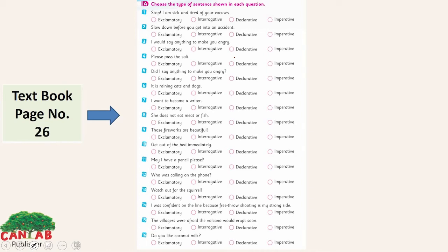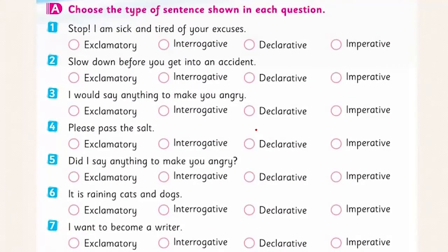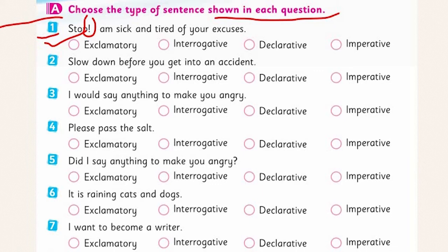Now look at page number 26. There is an exercise on types of sentences. You have to choose the type of sentence shown in each question. Look at the first one: 'Stop! I am sick and tired of your excuses!' We have an exclamation mark here, so it is very obvious — it is an exclamatory sentence, indicating strong feelings or emotions.